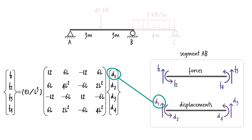Further, D1 is the vertical displacement, and D2 the rotation at the left end of the segment, D3 is the vertical displacement, and D4 the rotation at the right end of the segment.